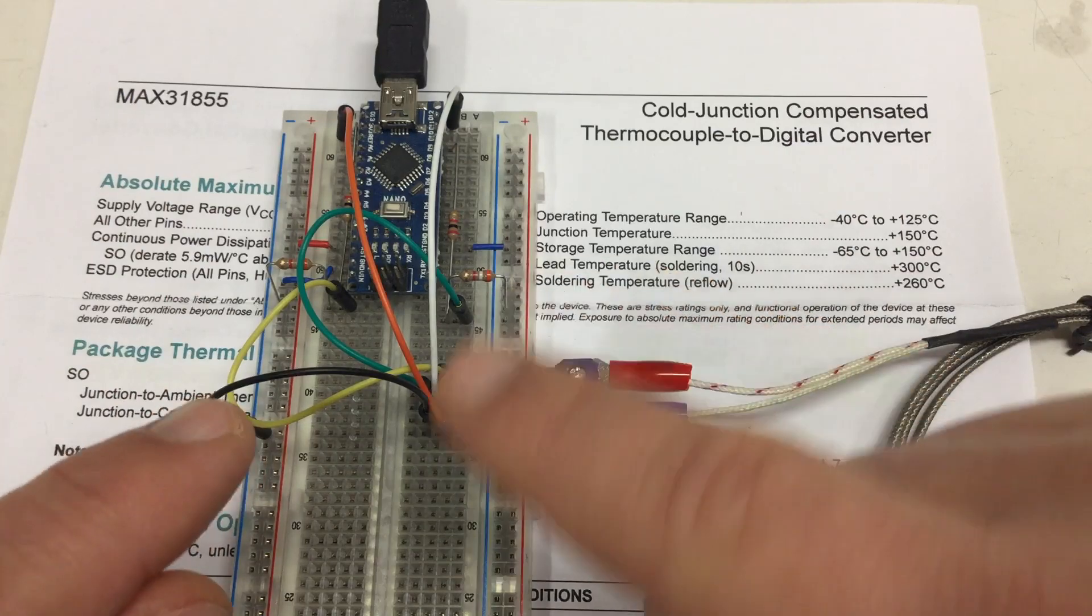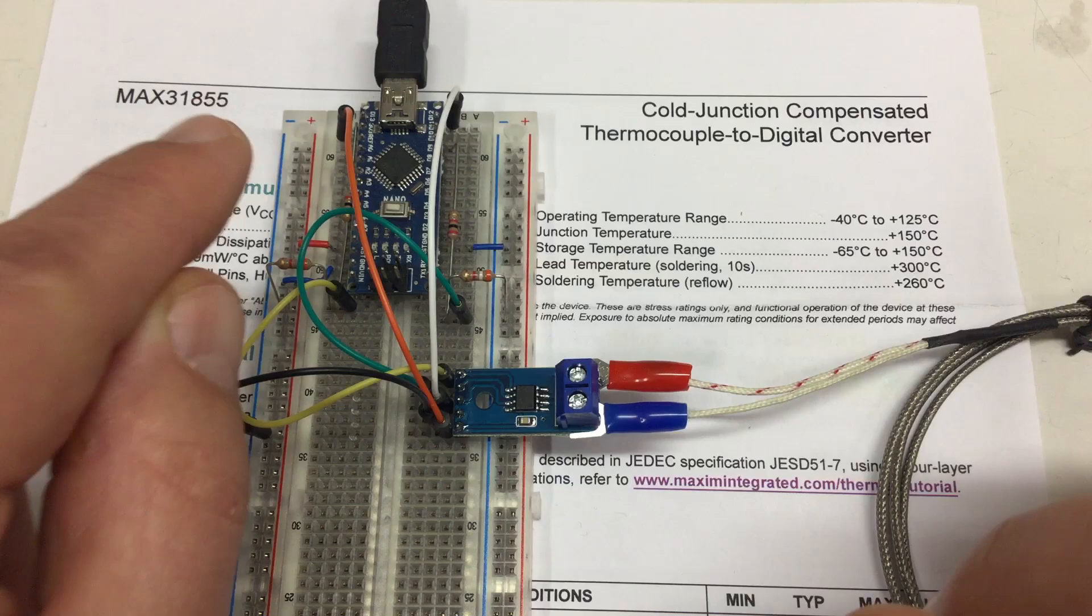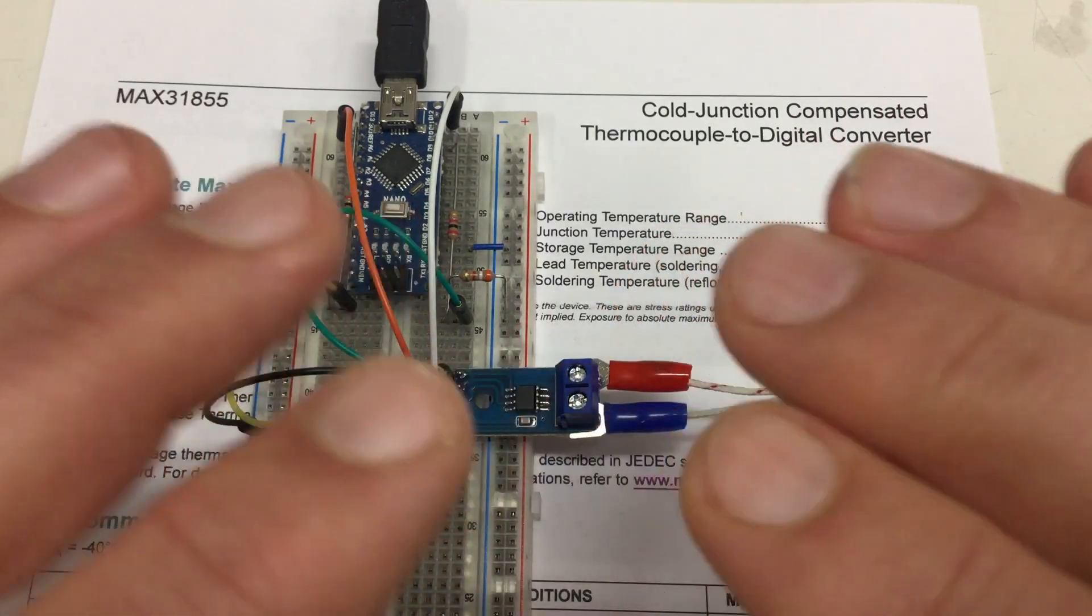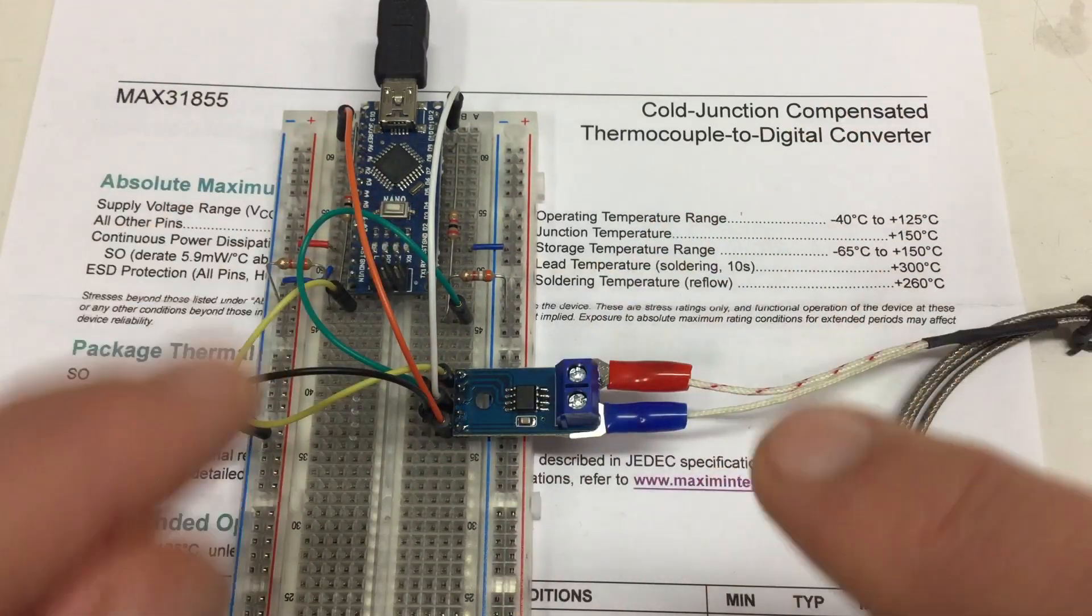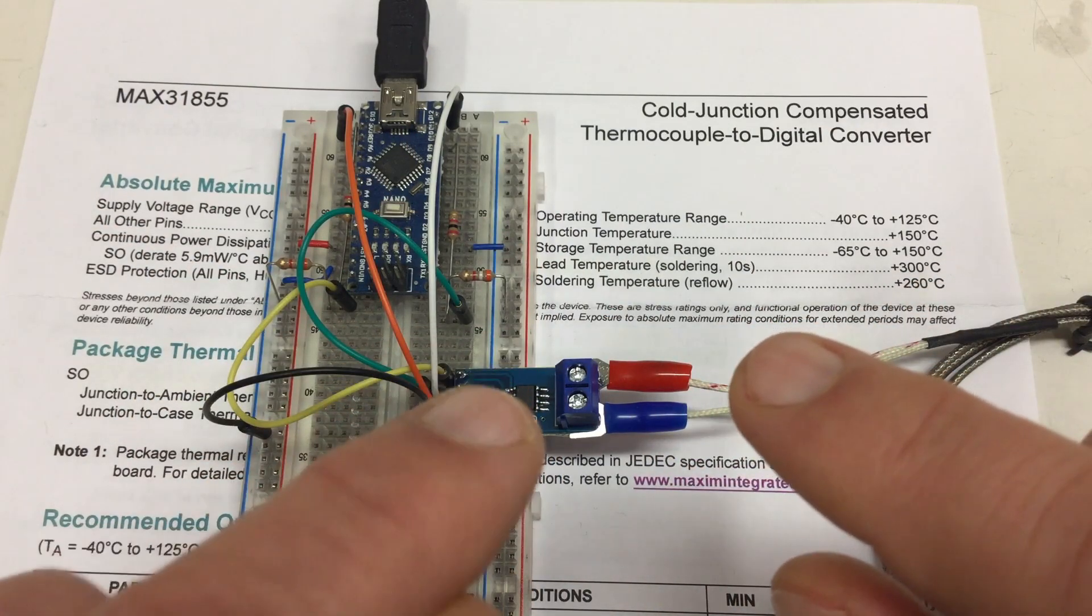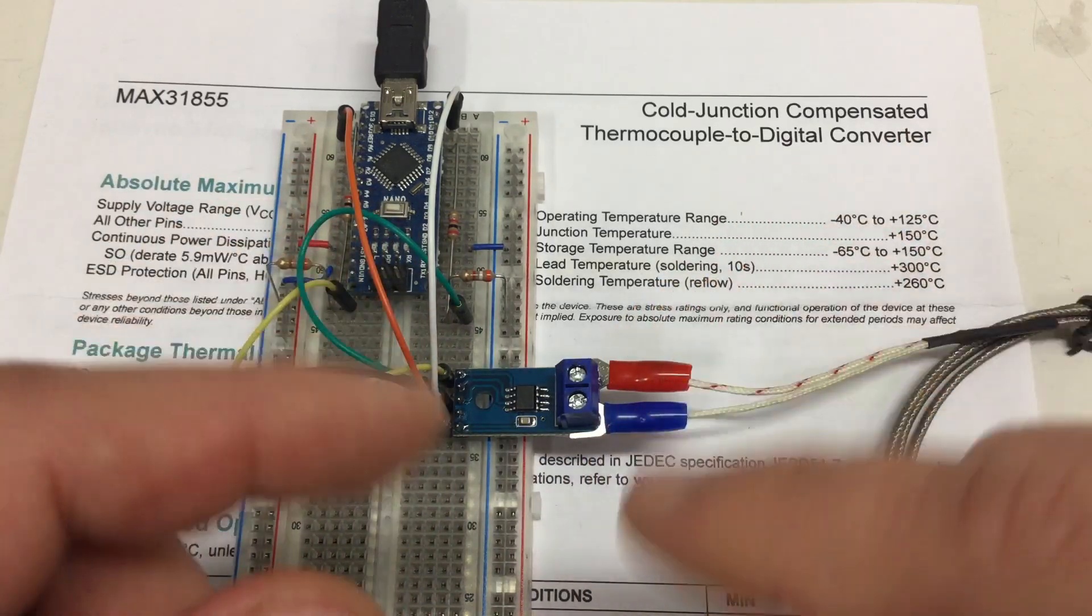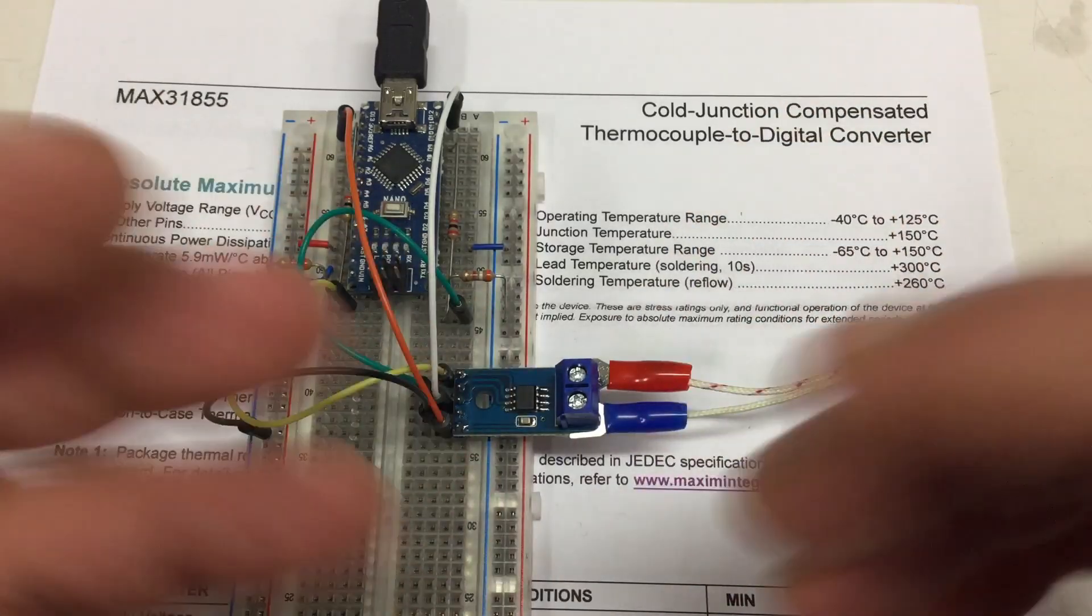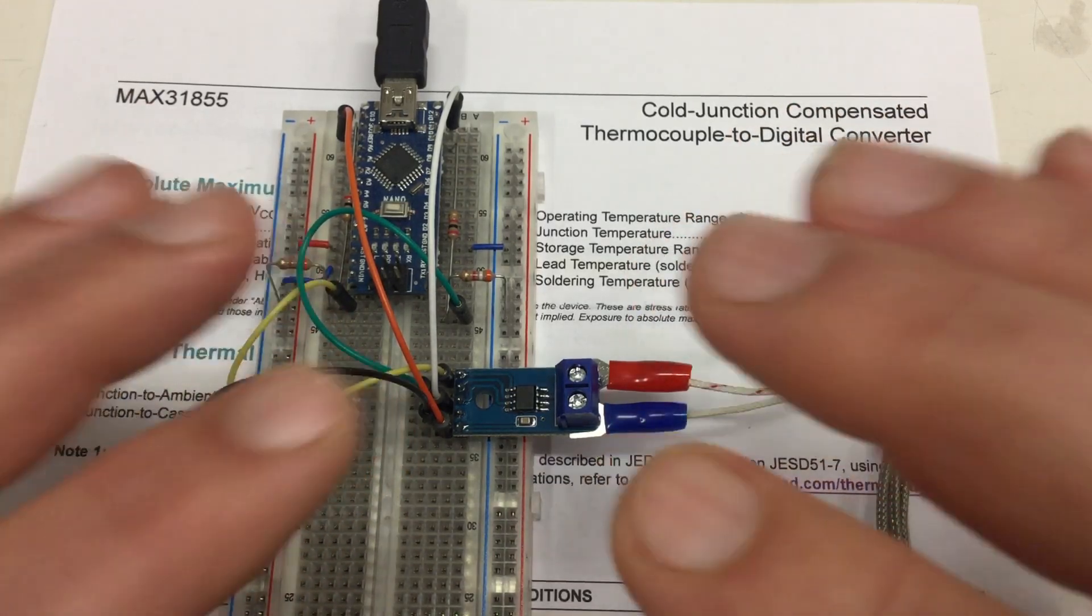Turns out that module sports a fake Max 31855K chip. Now, I wouldn't care about a fake chip on a cheap Chinese module—that's between Maxim and the Chinese. However, these fake Max 31855K chips do not work, and that's putting me off big time.